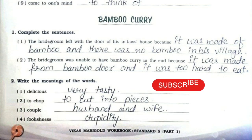Now we'll see the exercise for Bamboo Curry. First question: complete the sentences. First one: the bridegroom left with the door of his in-law's house because it was made of bamboo and there was no bamboo in his village. Second: the bridegroom was unable to have bamboo curry in the end because it was made from the bamboo door and it was too hard to eat.